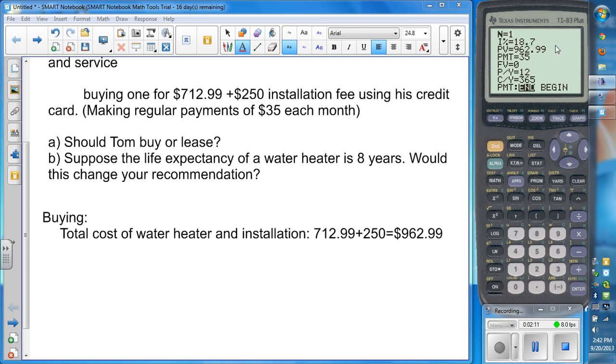So we need to find the number of payment periods. Oops, payment, we're not adding to it, we're taking away. There we go. So we need to find our number of payment periods. To do this, you can go into apps, finance, we're looking to find N. Go down to N, hit enter. So the number of payment periods is 36.307, so 37 months it's going to take him.